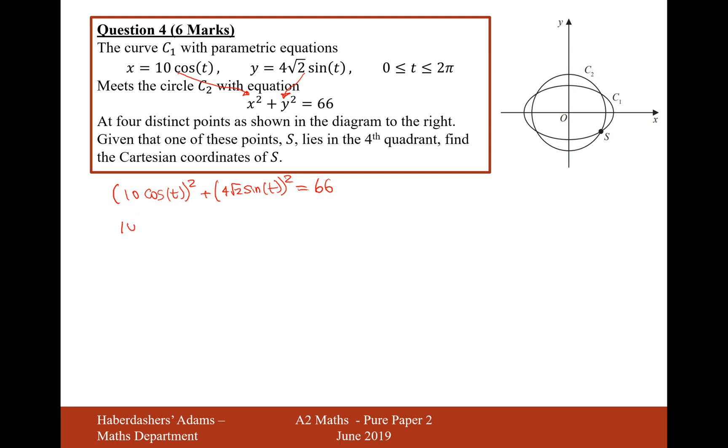So let's expand the brackets. It's going to be 100 cos squared t plus 4 squared is 16 and root 2 squared is 2, so 16 times 2 is 32, sine squared t equals 66.